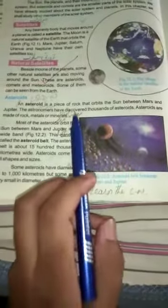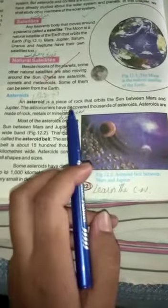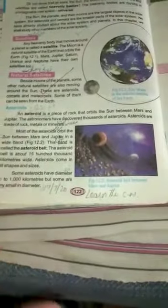The next one is asteroids. It is a new term. Asteroids are a piece of rock that orbits the Sun between Mars and Jupiter. It's a specific space in the solar system between Mars and Jupiter.